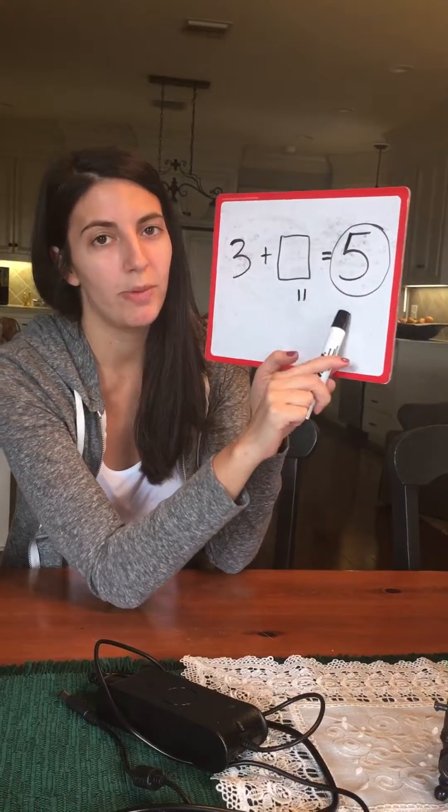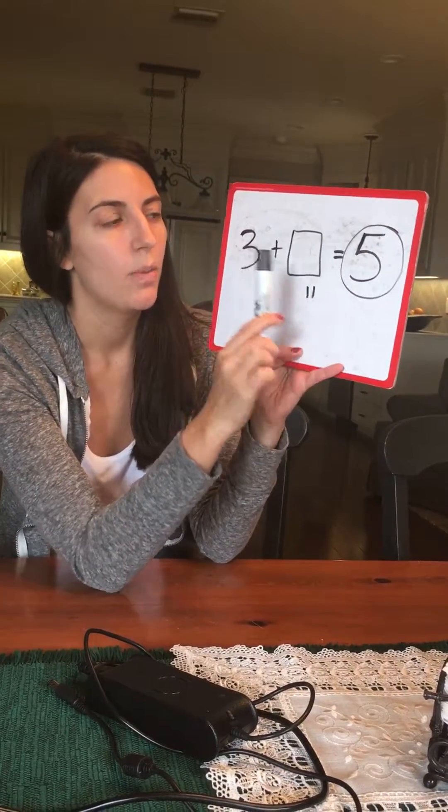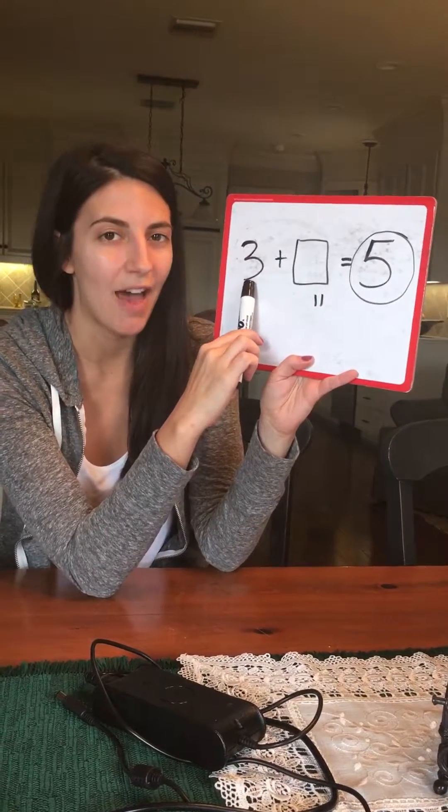A lot of times the kids will go a little bit further, and just remind them five is what you're ending up with. So you'll erase this, try it again. What are you going to end up with? Five. How many do you have? Three.